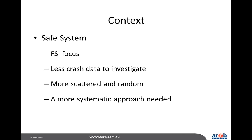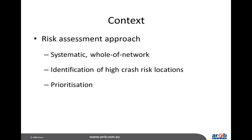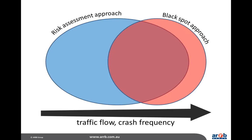It has been recognised that a more systematic approach is needed. The risk assessment approach is systematic and can be applied across a whole route or network. It can identify locations at high risk of severe crashes irrespective of previous crash history, and this information can then be used to inform and prioritise safety treatment programs. There is still a need for both approaches: the risk assessment approach is applicable for low-volume networks with fewer scattered crashes through to higher volume networks, while for roads with higher crash incidence, traditional crash investigation techniques are appropriate.